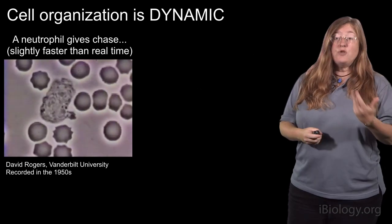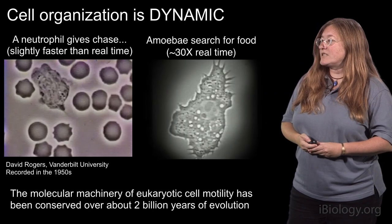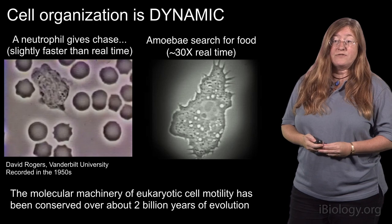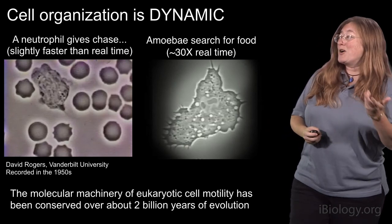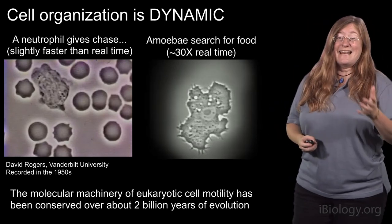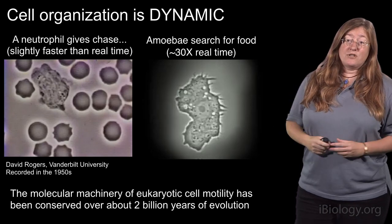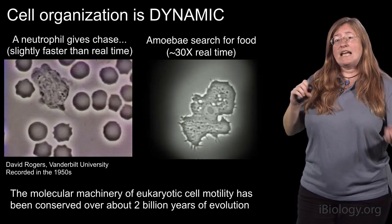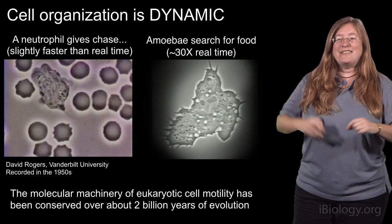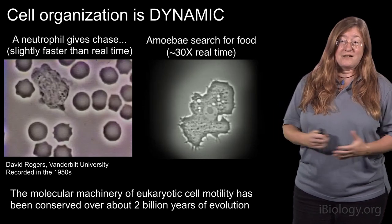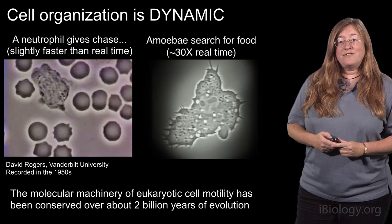Now, that happens to be a human neutrophil, probably taken from David Rogers' own blood. But if we look at other types of eukaryotic cells, we can find examples like this amoeba — Acanthamoeba castellanii — which lives in the soil and also makes a living by crawling around and eating bacteria. When we watch it move under the microscope, it looks remarkably similar to the movement of the human neutrophil. It would take an expert to tell the difference, and yet these two cell types have been separated by about 2 billion years of evolution. We appreciate today that not only is the overall appearance of motility quite similar, but the fundamental molecular machinery that drives the motion has also been conserved. One of the most important elements of that machinery is the actin that self-assembles into filaments.